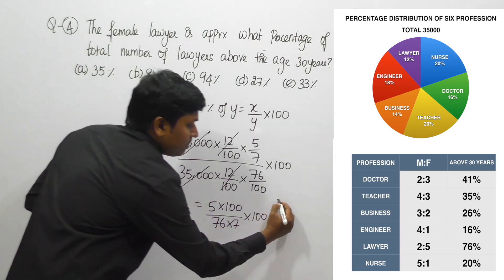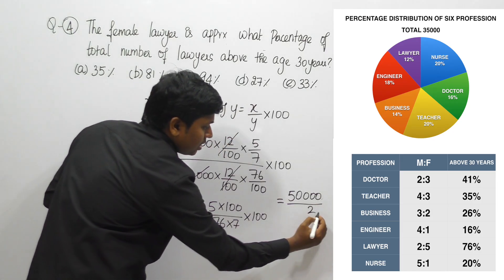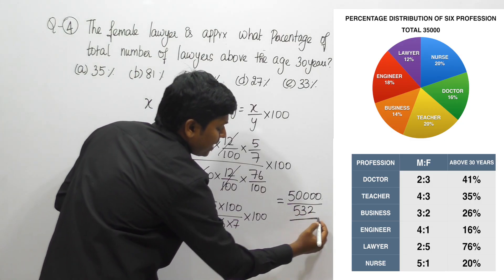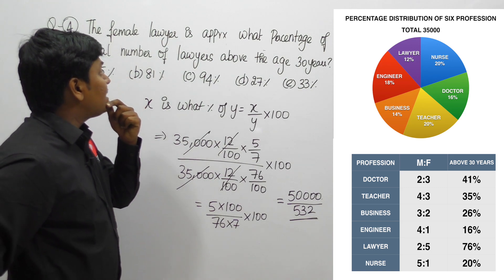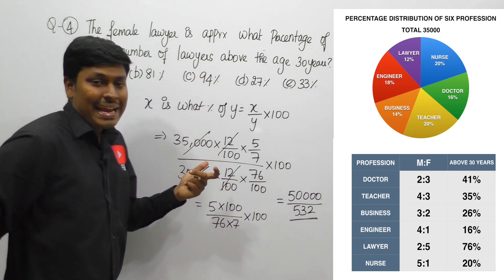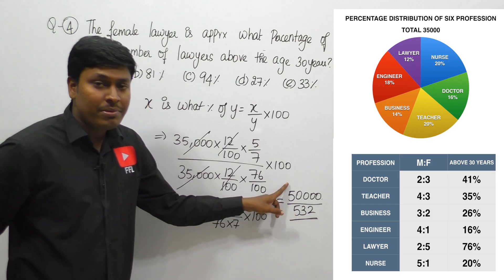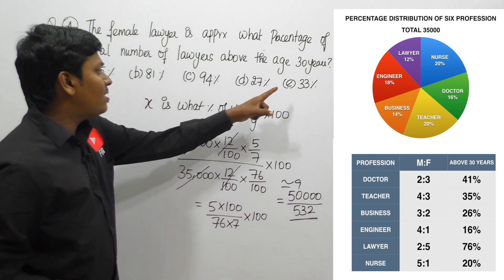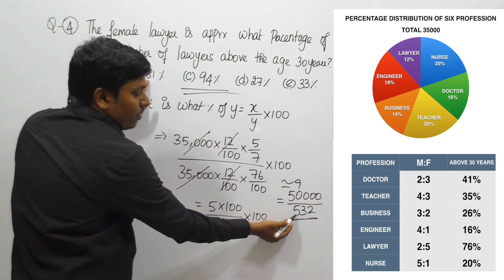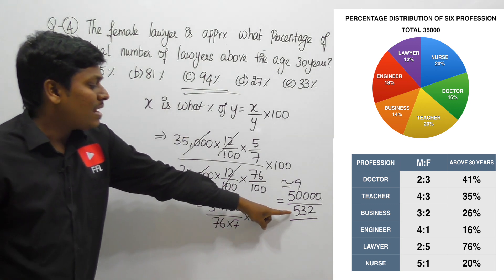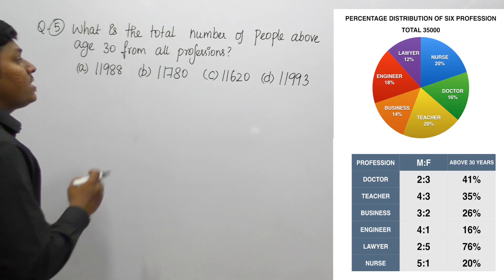Simplifying: numerator = 500, denominator = 76 × 7 / 100. Computing 76 × 7 = 532, so denominator = 532/100. The expression becomes 500 × 100 / 532 = 50,000 / 532 ≈ 94. Checking: 9 × 5 = 45 is close to 50, so the answer starts with 9. Option C, approximately 94%, is your answer.